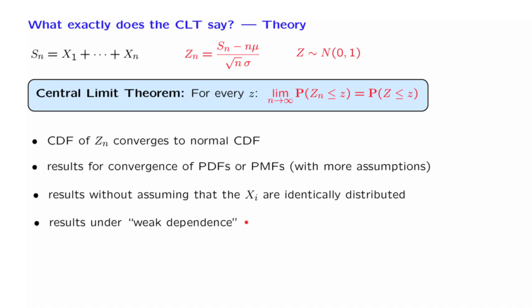Also, the assumption of independence does not need to be literally true. There are versions of the central limit theorem that are valid when we have just weak dependence — that is, nearby X's may be dependent. But if you compare X5 with X of 1 million, then these two random variables are essentially independent. In those cases, we can still apply a suitable version of the central limit theorem.